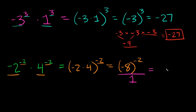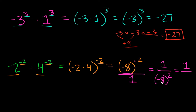After flipping, we have 1 over negative 8 to the positive 2. We keep the base negative 8 and change only the exponent from negative 2 to positive 2. Now simplifying: negative 8 times negative 8 is positive 64, so the answer is 1 over 64.